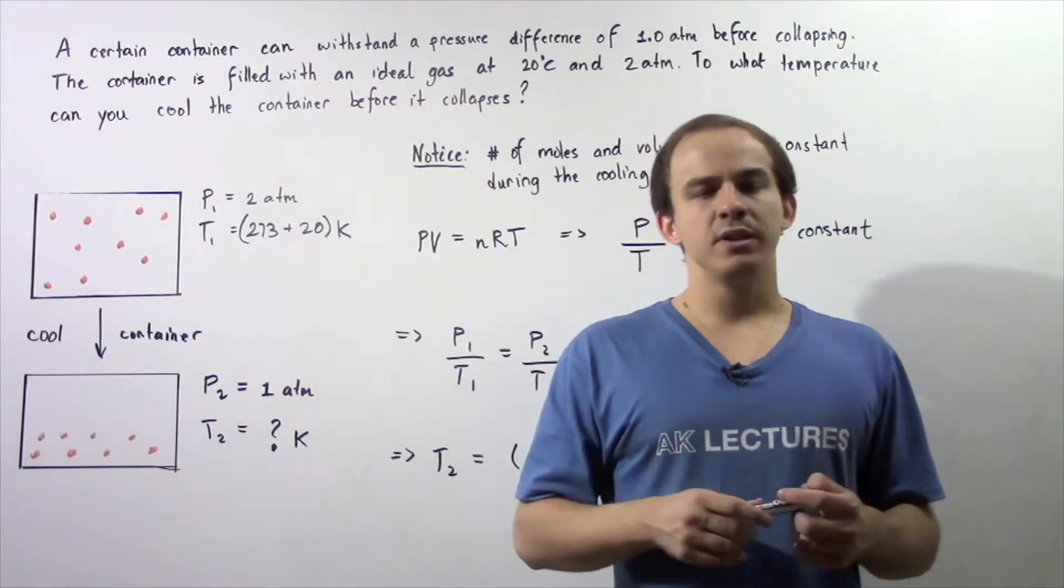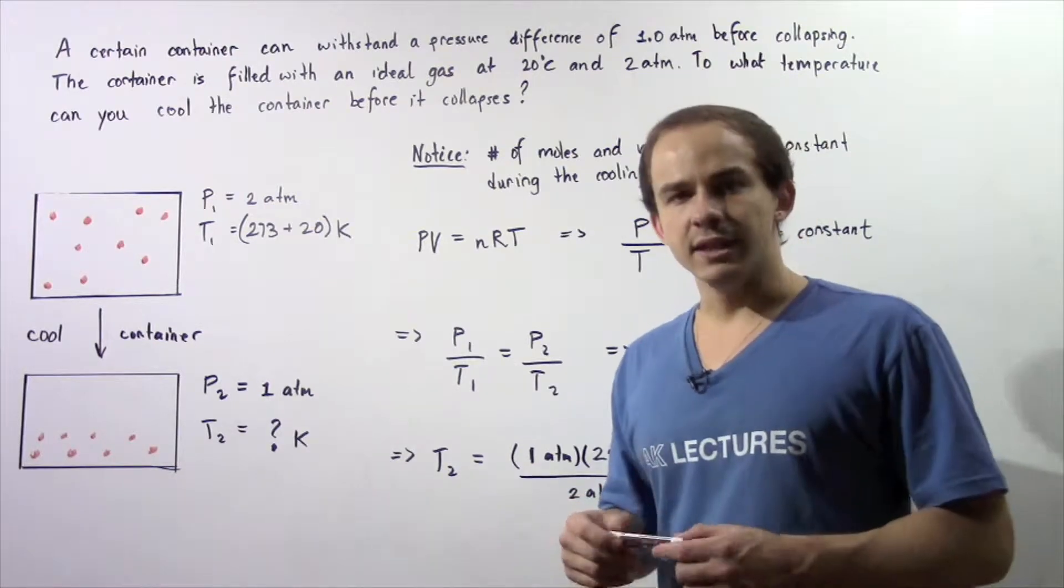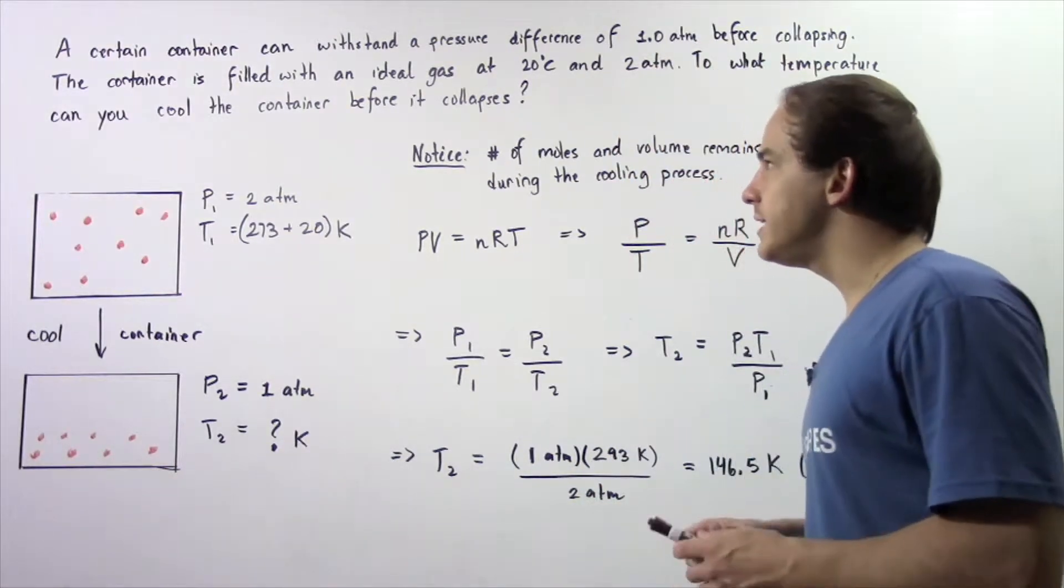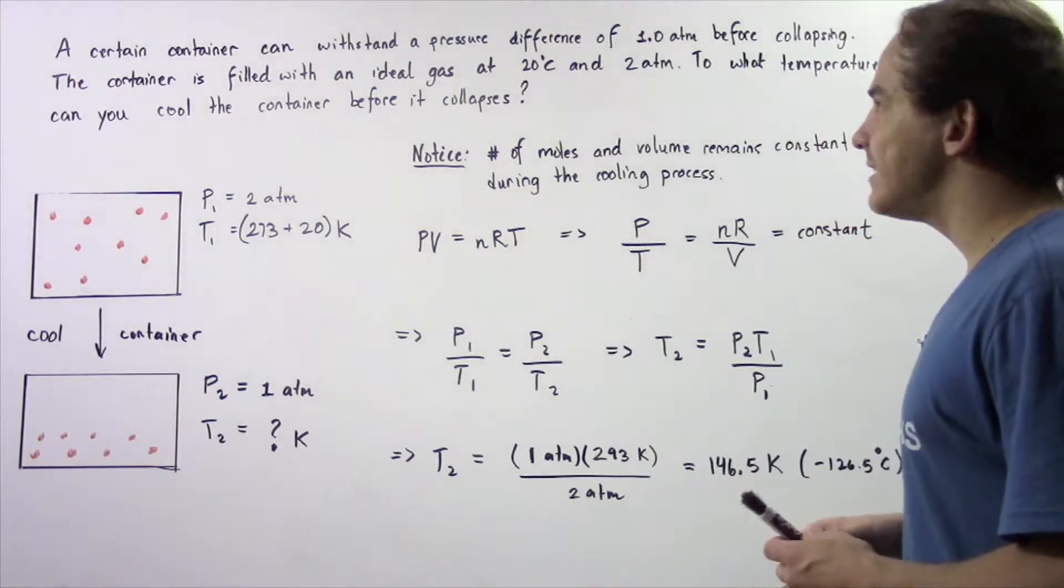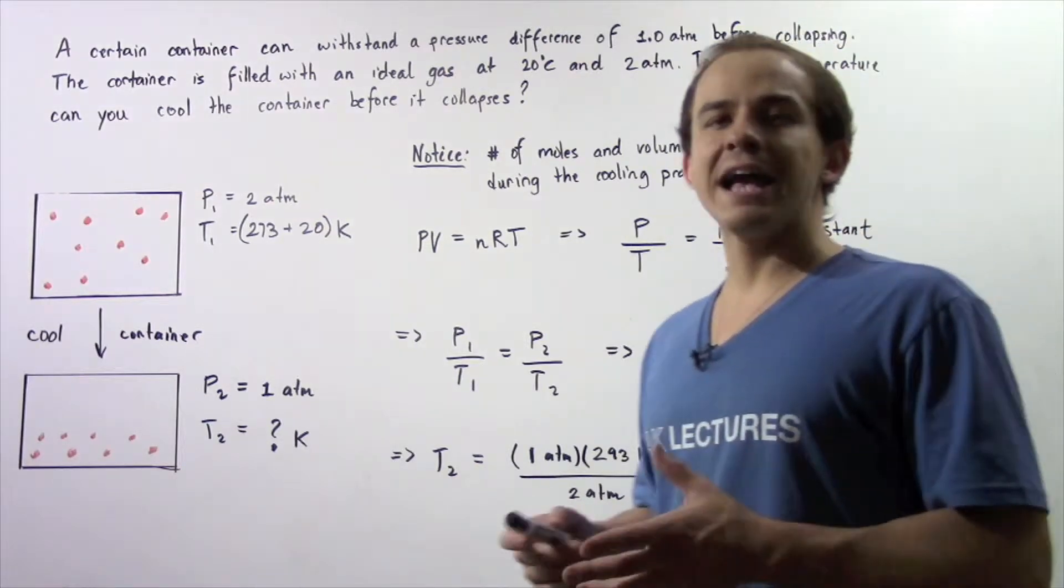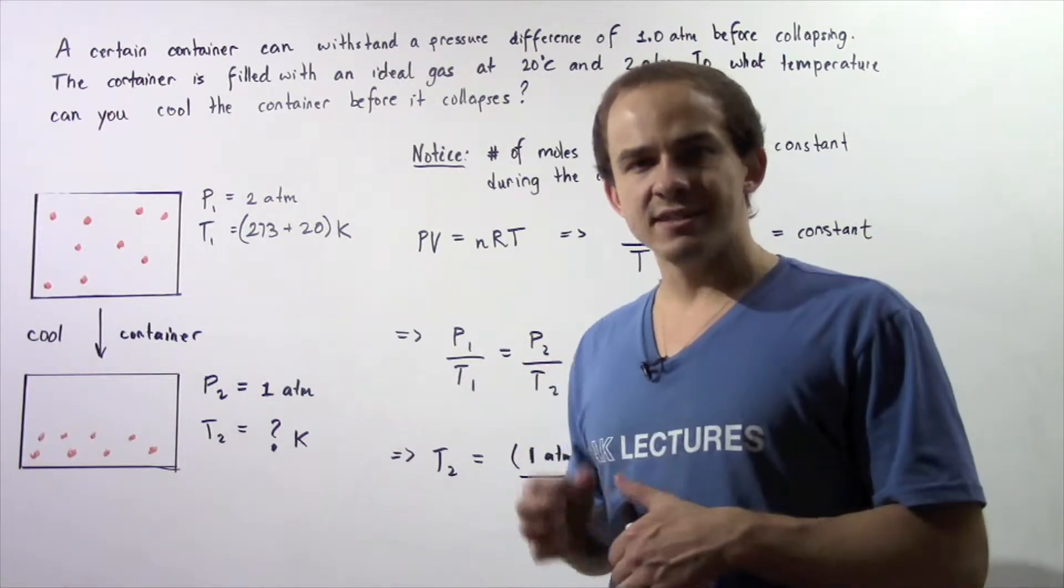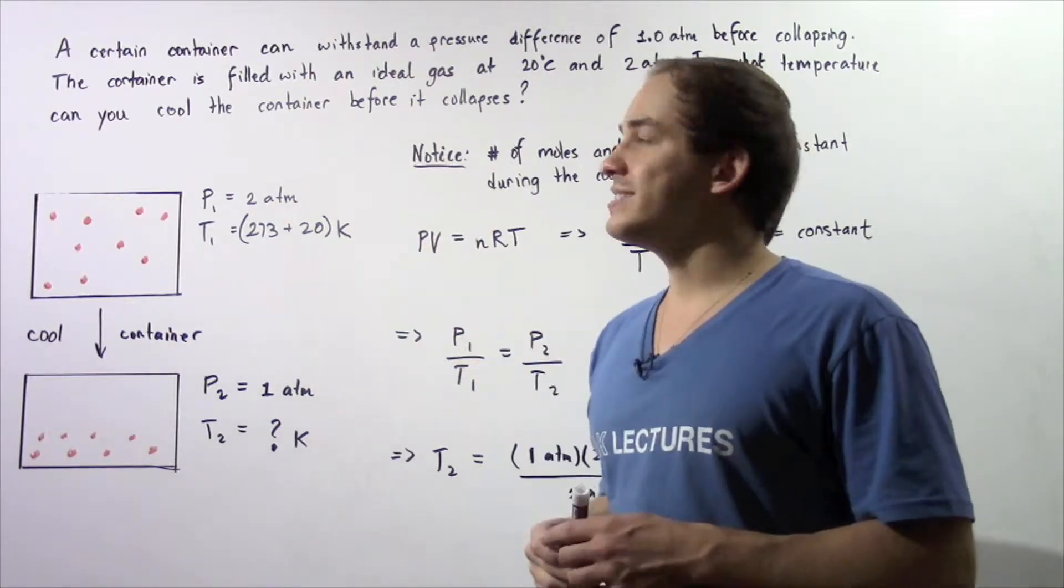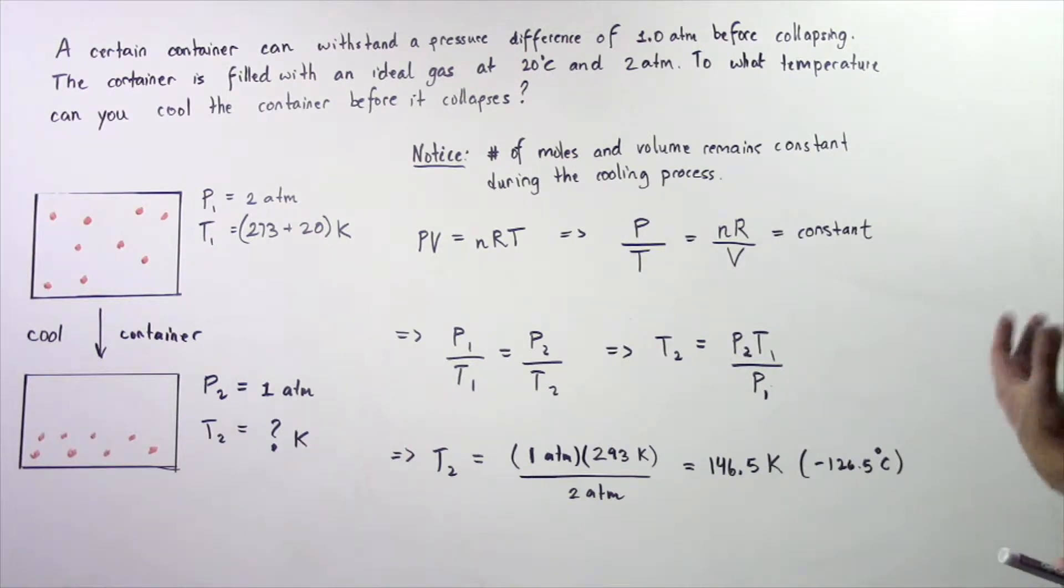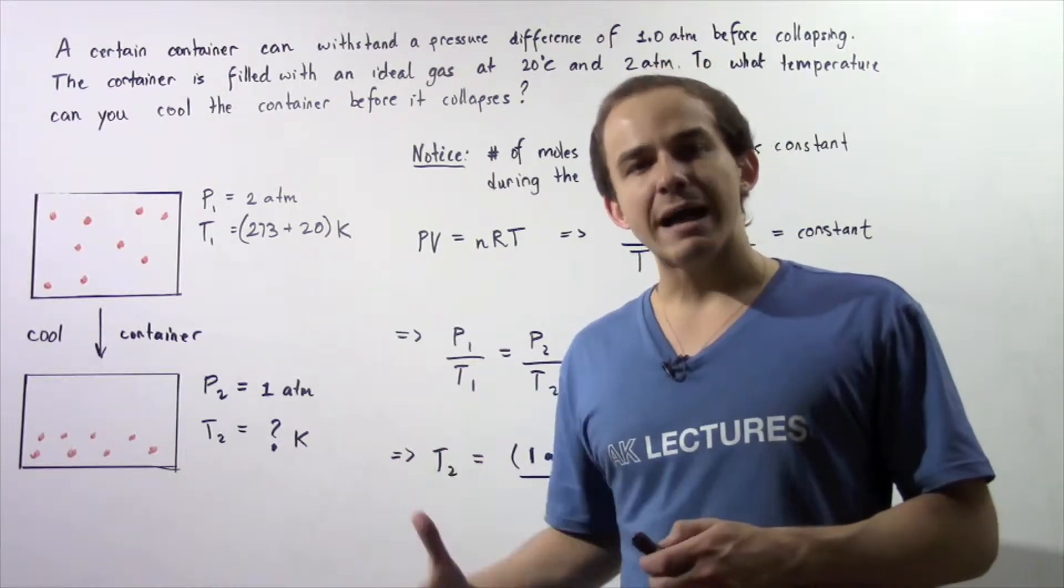Let's look at the following example in which we're going to use the ideal gas law to calculate the temperature of a gas system. A certain container can withstand a pressure difference of 1 atm before actually collapsing. Initially the container is filled with an ideal gas at 20 degrees Celsius and at 2 atm. To what temperature can you cool the container before it actually collapses?